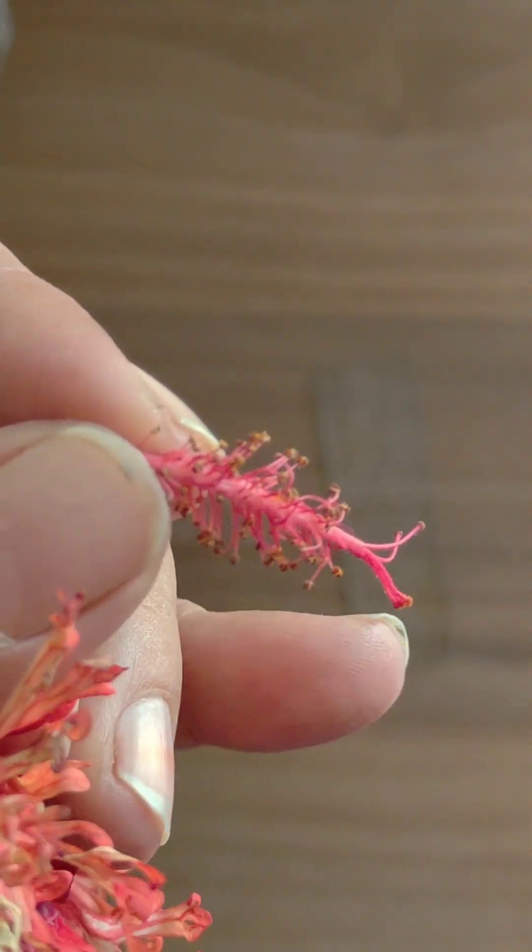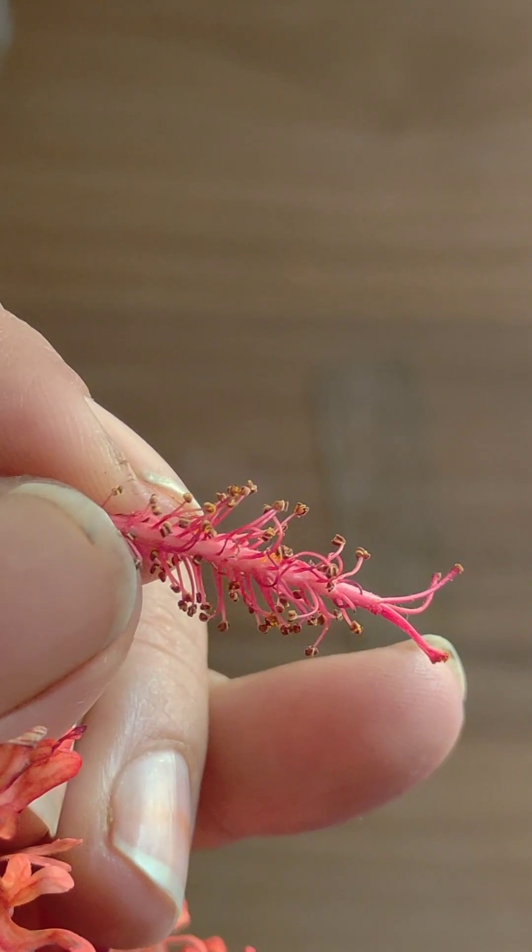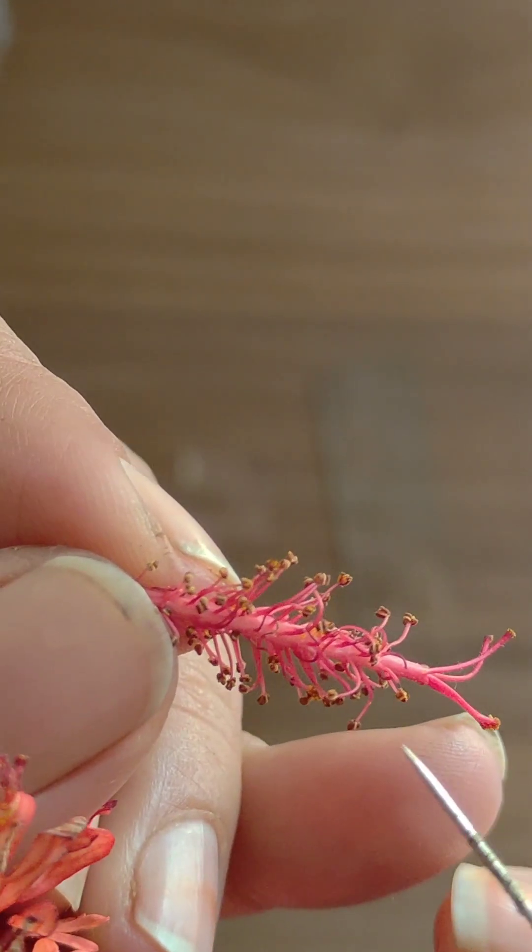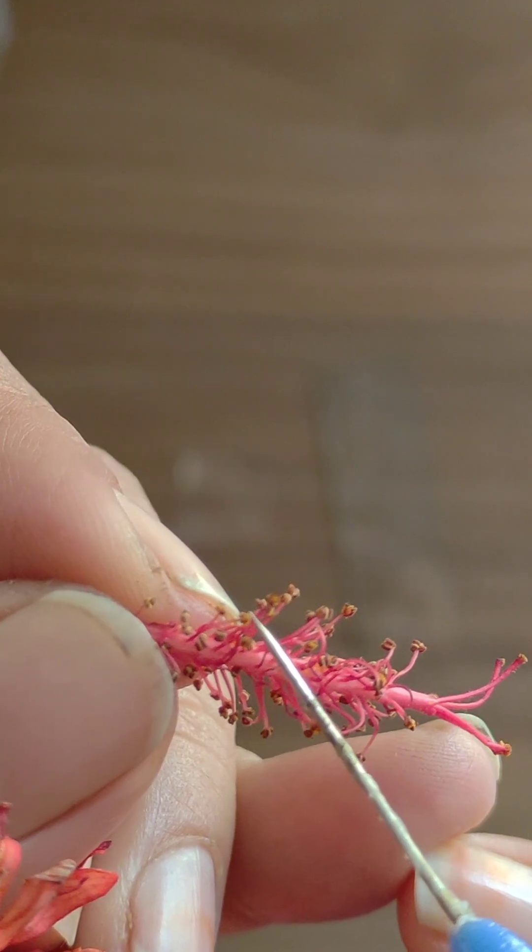First of all, gently remove the pollen grains from the hibiscus plant, flower, sorry. This is the pollen grains.